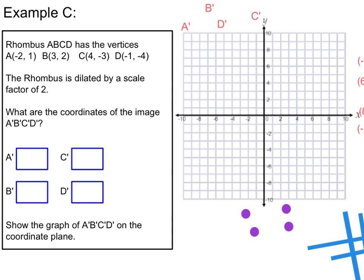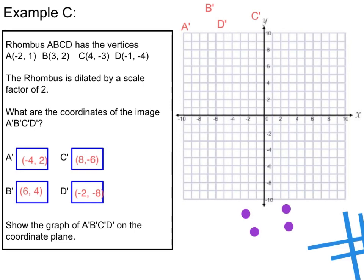Let's take a look at example C. A rhombus ABCD has the vertices listed below, and it is dilated by a scale factor of 2. What are the coordinates of the image A prime, B prime, C prime, D prime? Notice I don't have the shape on the coordinate plane, but that's fine — all I'm doing is multiplying. Negative 2 times 2 is negative 4, and 1 times 2 is positive 2. 3 times 2 is 6 and 2 times 2 is 4. 4 times 2 is 8 and negative 3 times 2 is negative 6. Negative 1 times 2 is negative 2 and negative 4 times 2 is negative 8. To check, plot the original points and verify the shape is bigger and further from the origin, or check your multiplication with a calculator.